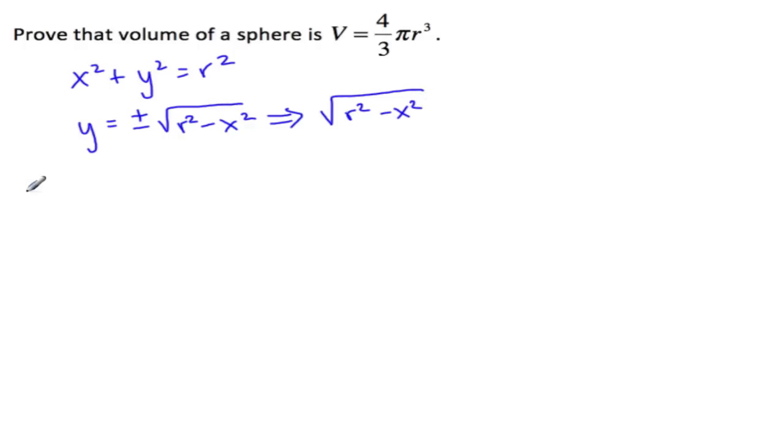Okay, so now my integral will be pi from zero to r, my radius, of r squared minus x squared, all squared. It's pi r squared, and dx. This will simplify to just r squared minus x squared dx. That square root and squared will cancel. Now, the integral of r squared...